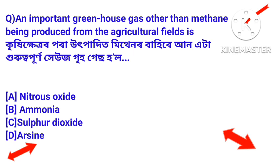Question: An important greenhouse gas, other than methane, being produced from agriculture fields — what is that gas? Besides methane, another important greenhouse gas produced from agriculture fields is nitrous oxide.